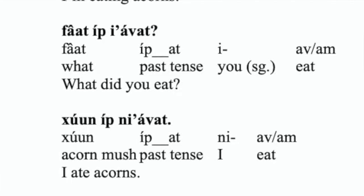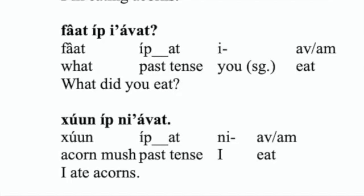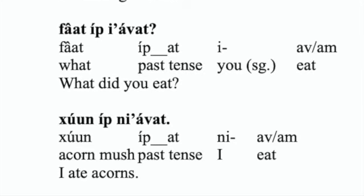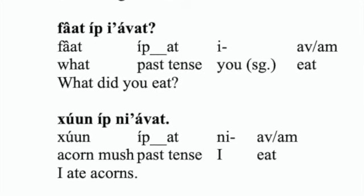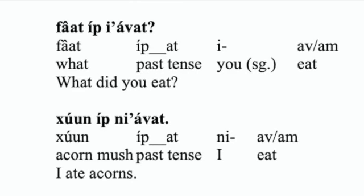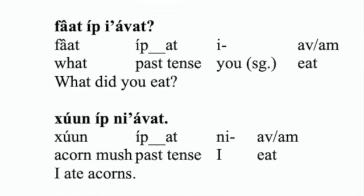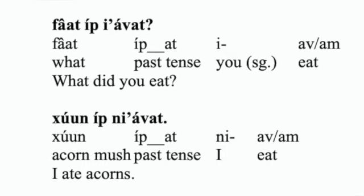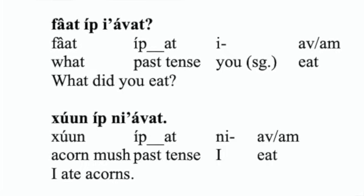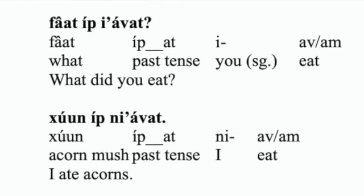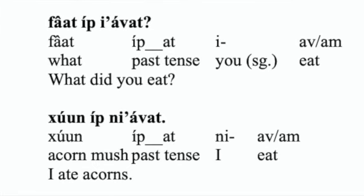Faat ippi avat — faat, ip — at is a past tense specifically meaning that it's already done, it has happened and it's no longer continuing to happen. E — singular. Av, um — eat. Faat ippi avat — what did you eat?